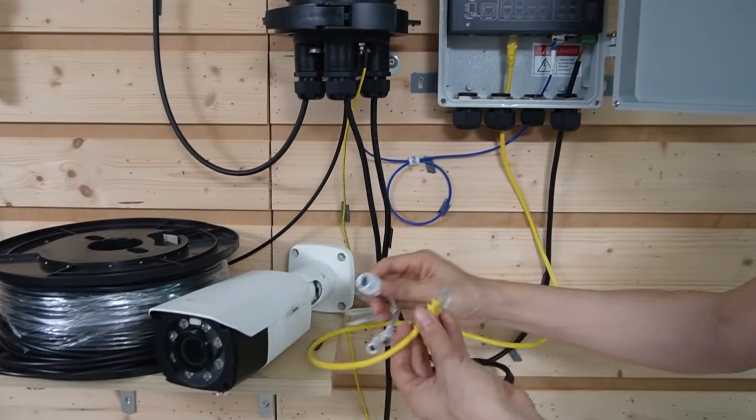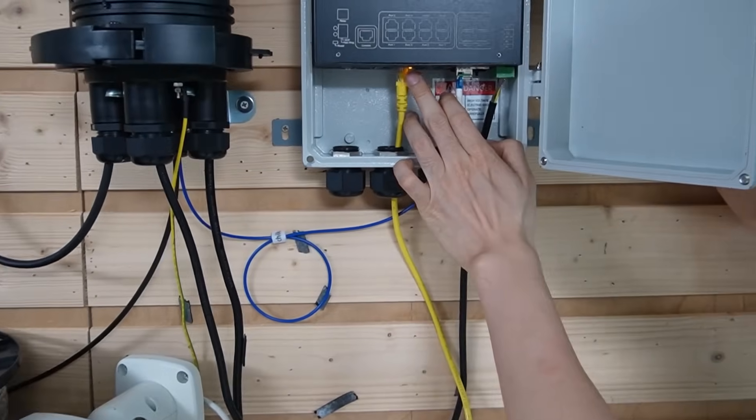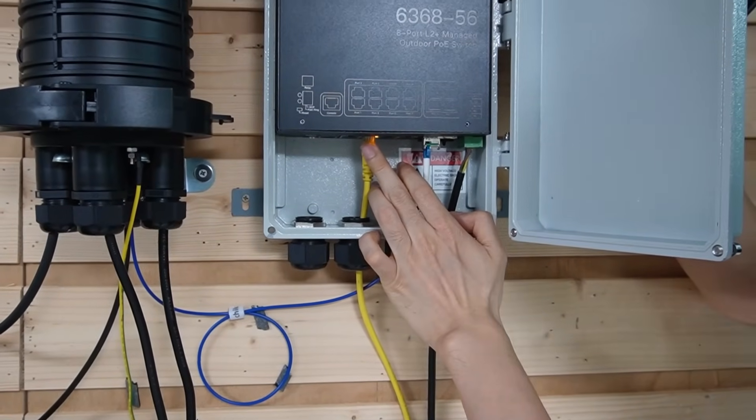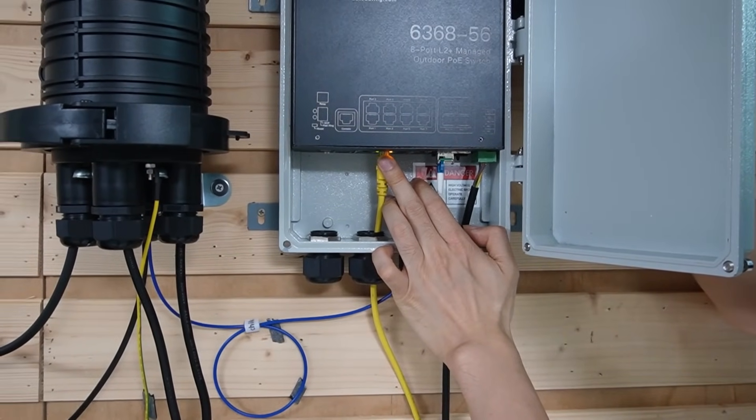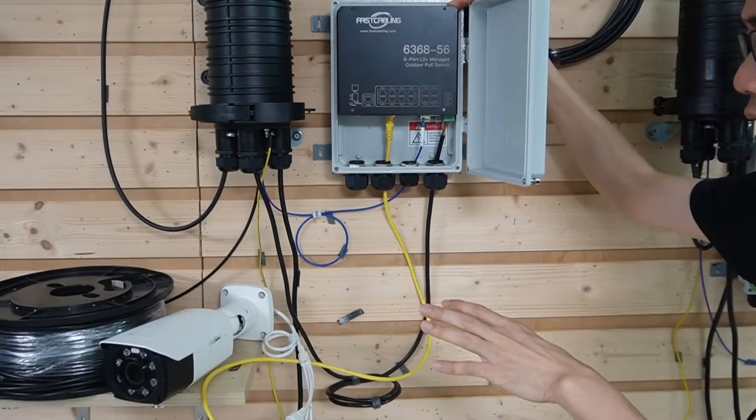Let's test one of these cameras. The power indicator is on, and the data indicator is on as well. The PoE switch is now providing power and data exchange with the camera.